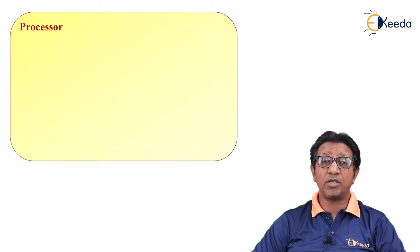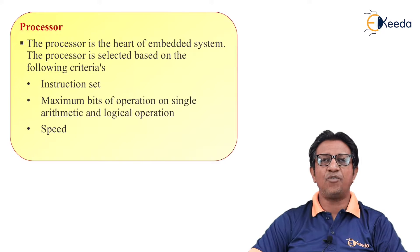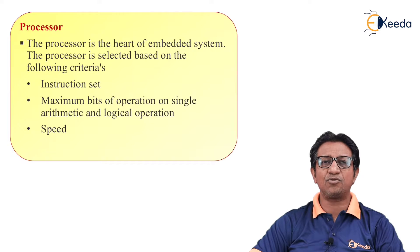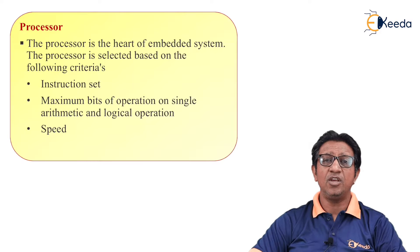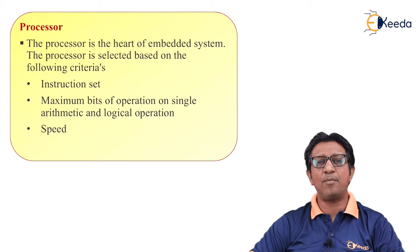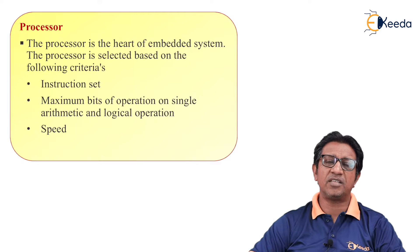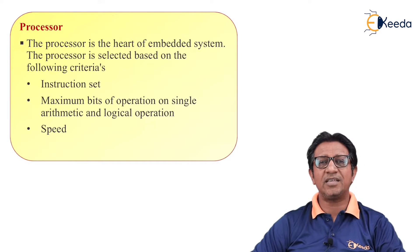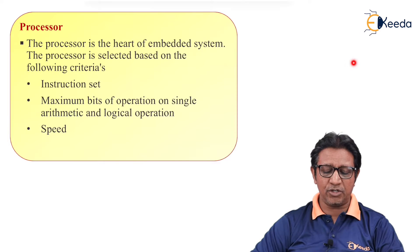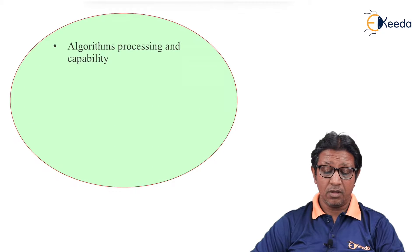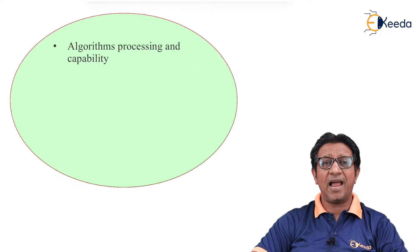The next is processor. The processor is the heart of any system — embedded or general purpose. Its main functions are to generate timing signals, perform calculations, and carry out controlling functions. When selecting a processor for an embedded system, a few criteria must be considered: first is instruction set, second is maximum bit of operation, third is speed, and fourth is algorithm processing and capability.